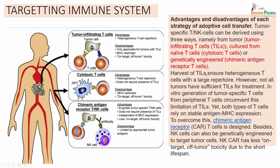Harvest of the tumor infiltrating cells ensures heterogeneous T cells with a very large repertoire. However, not all tumors will have enough number of tumor infiltrating cells for treatment. Therefore, it is important to genetically engineer them. It is possible for in vitro generation of tumor specific T cells from the peripheral T cells, and they can be useful as they can circumvent the limitation of the tumor infiltrating cells.